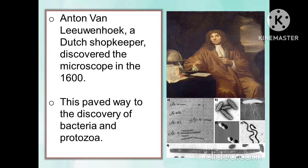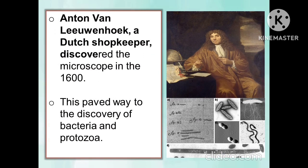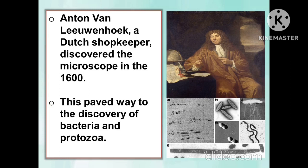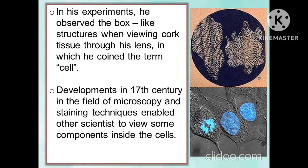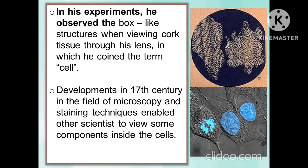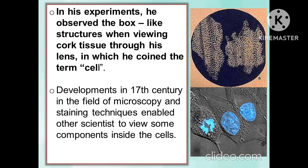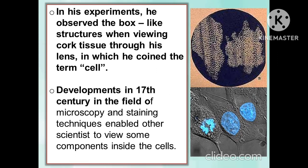Anton van Leeuwenhoek is a Dutch shopkeeper who discovered the microscope in the 1600s. This paved the way to the discovery of bacteria and protozoa. In his experiments, he observed the box-like structure when viewing cord tissue through the lens, in which he coined the term cell.